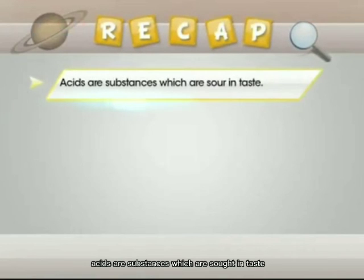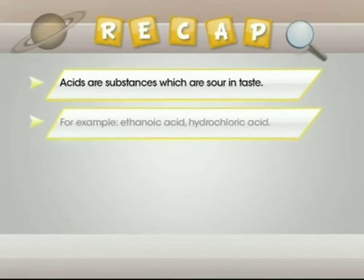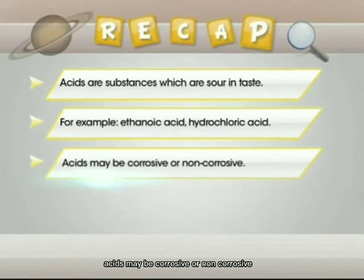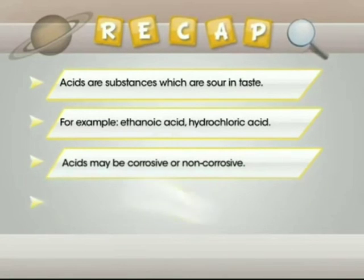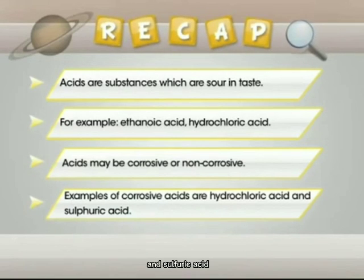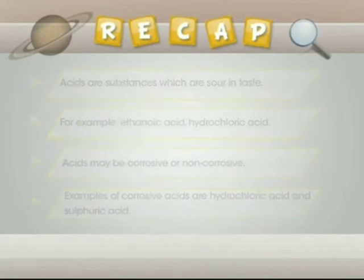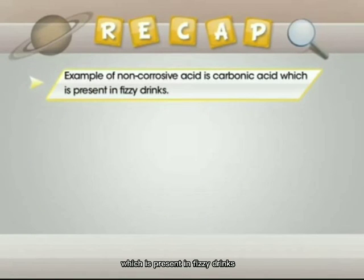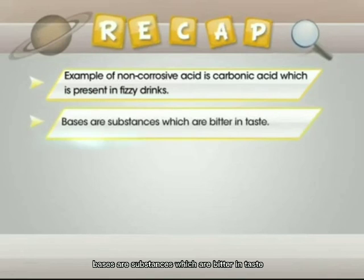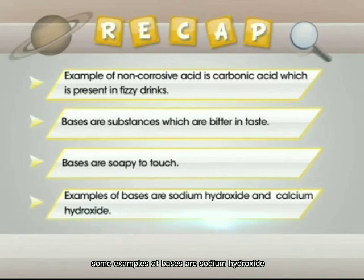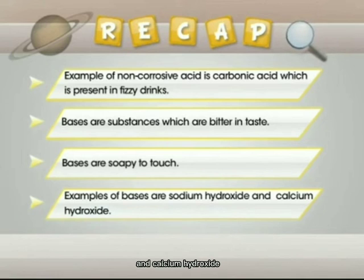Let's do a recap. First, acids are substances which are sour in taste. Second, examples include ethanoic acid or hydrochloric acid. Third, acids may be corrosive or non-corrosive. Examples of corrosive acids are hydrochloric and sulfuric acids. Example of a non-corrosive acid is carbonic acid, which is present in fizzy drinks. Bases are substances which are bitter in taste and soapy to touch. Examples of bases are sodium hydroxide and calcium hydroxide.